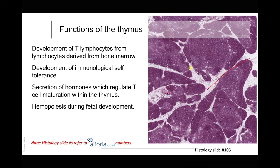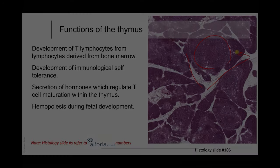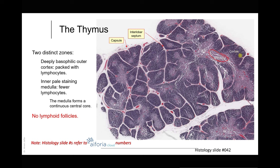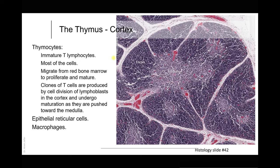In a histological section of the thymus you can see the interlobular septa, and in each lobule there is a medulla and a darkly staining cortex. The cortex is highly packed with lymphocytes which are undergoing development, while the inner pale-staining medulla has fewer lymphocytes. The medulla forms a continuous core that is covered by the cortex. Importantly, in the cortex there are no lymphatic nodules — unlike what we will see in the lymph node. Blood vessels are visible in the interlobular septa.